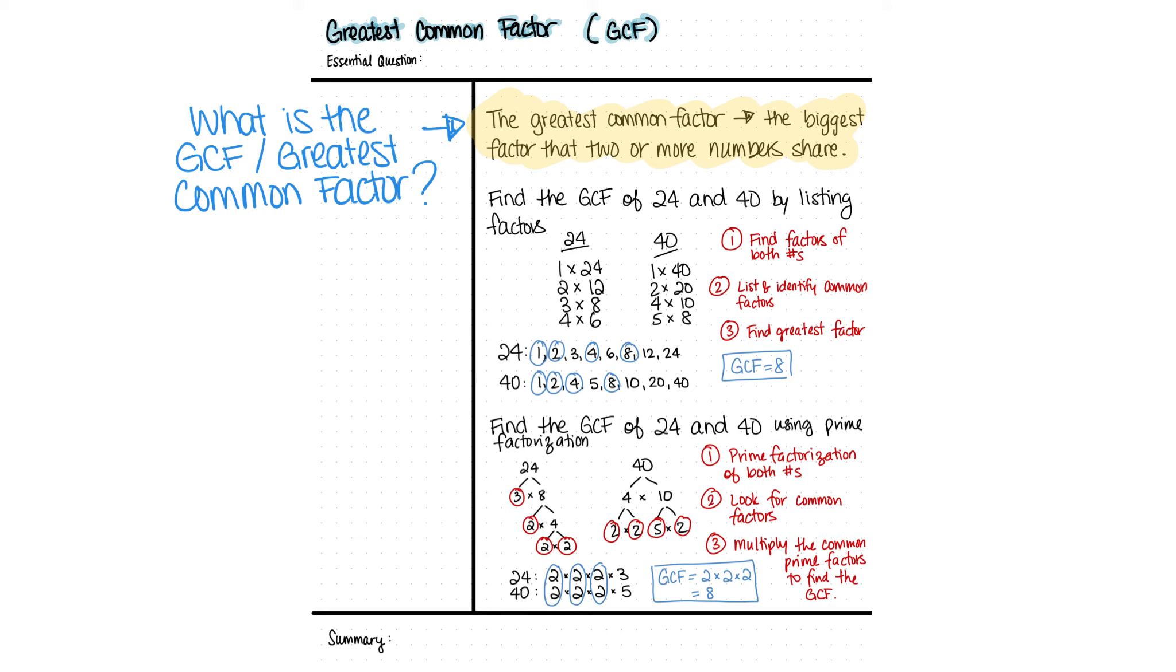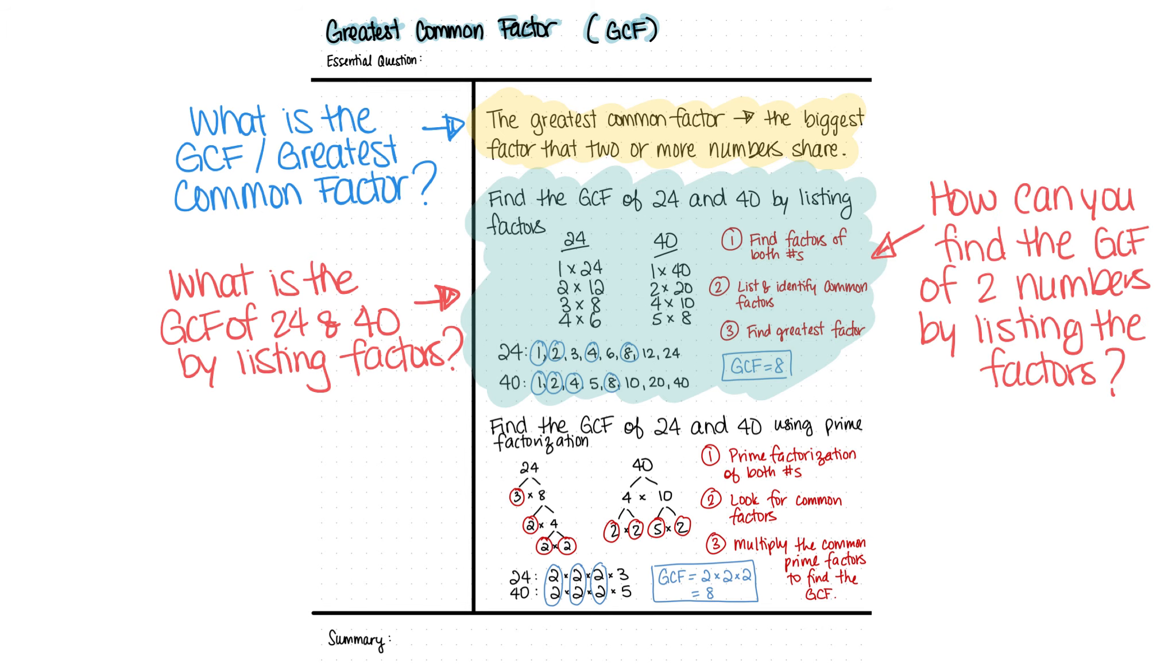So, now, let's take a look at that first example we did, which was right here. And, if we looked at all of this work here, what kind of test question could your teacher have asked you about this? So, there are many answers for this. Again, question words who, what, where, when, and why. If we looked at that, it could be, you know, what is the greatest common factor of 24 and 40 by listing the factors? Or, we can even ask the question, how can we find the GCF of two numbers by listing the factors?